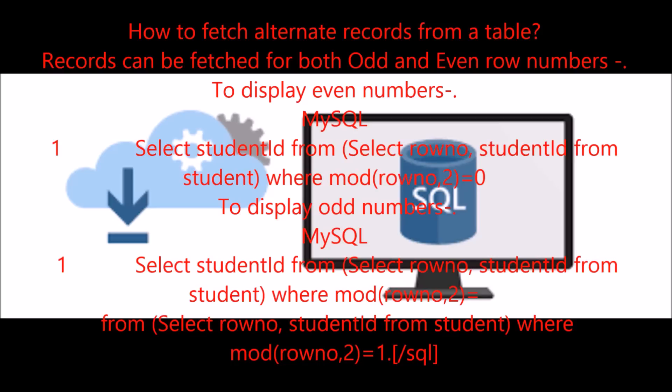To display odd numbers — MySQL: SELECT student_id FROM (SELECT row_no, student_id FROM student) WHERE MOD(row_no, 2) = 1.